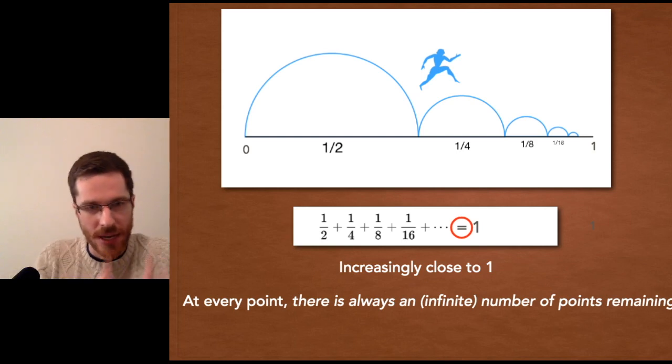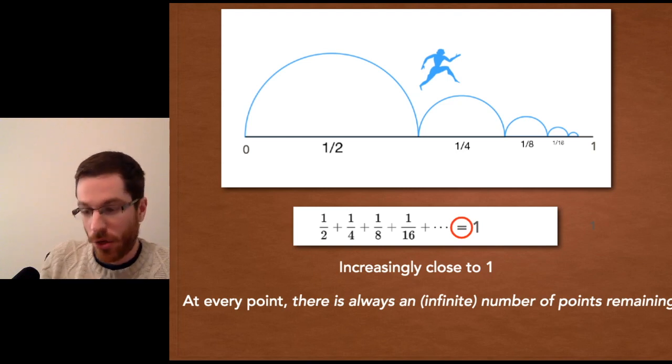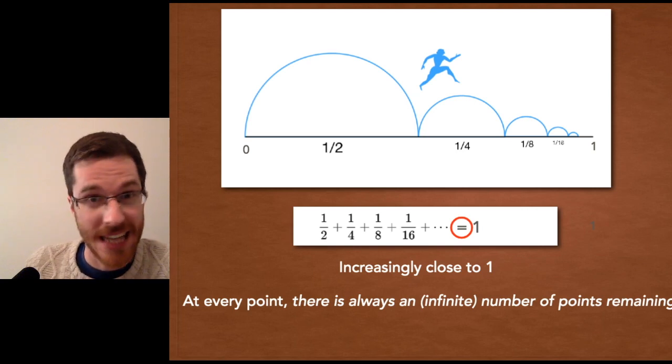So wherever he is in that race, if he's at the halfway point, the quarter point, the sixteenth, whatever it is, there is always not just additional points remaining, but an infinite number of points remaining. How the hell does that work?